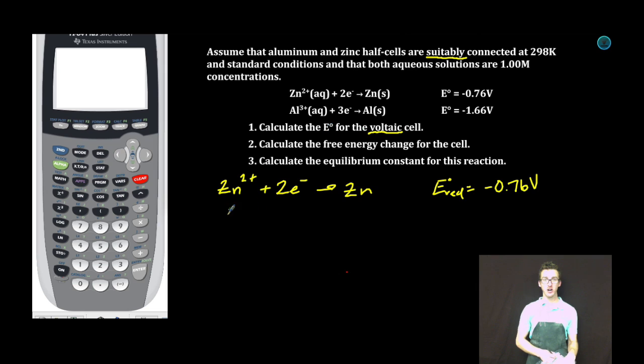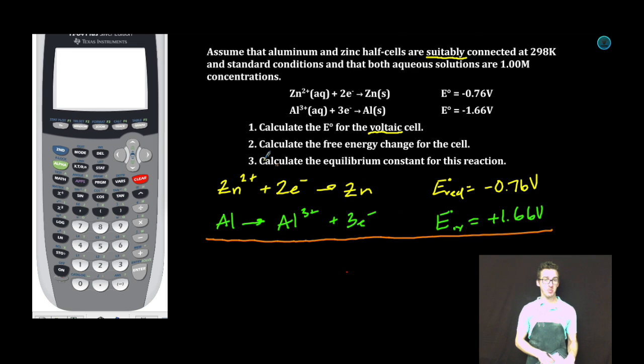We're going to reverse the second equation. We're going to change our sign to positive 1.66 volts. We're going to sum our equations together, but before we do, notice that zinc is showing gaining two electrons, aluminum losing three. Let's multiply this equation by three and our oxidation half reaction by two.